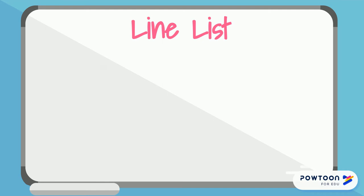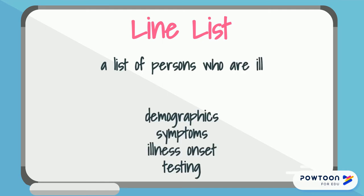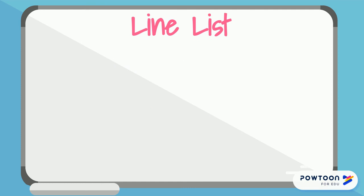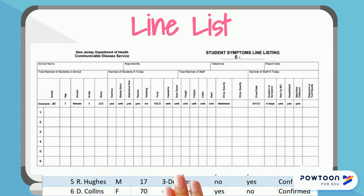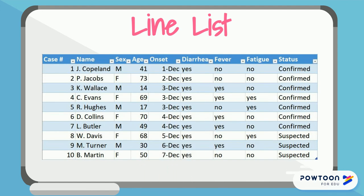A line list is a list of people who are ill. Line lists include basic information about the person, such as demographics, symptoms, illness onset, testing, etc. Line lists are often used during outbreaks to gather information about everyone who is sick and determine if they are part of an outbreak. Here is an example of a line list used for Salmonella outbreaks — some health departments just make a sheet in Excel. This is helpful to track all known ill people associated with the investigation. If this is a foodborne outbreak, it's also helpful to include and track what food they ate.